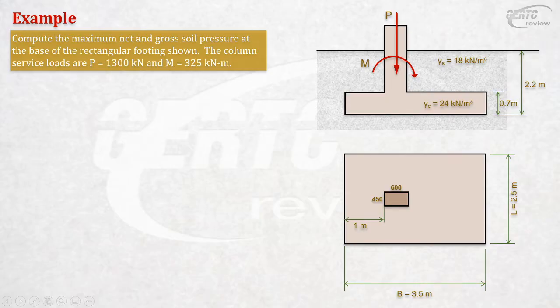The column size is 450 mm by 600 mm. Depth of footing below grade is 2.2 meters, and thickness of the footing is 0.7 meter. Unit weight of concrete and soil (gamma) are given. The loads are service loads. When analyzing soil pressure, do not use factored loads. Use factored loads only when designing concrete using load factors.